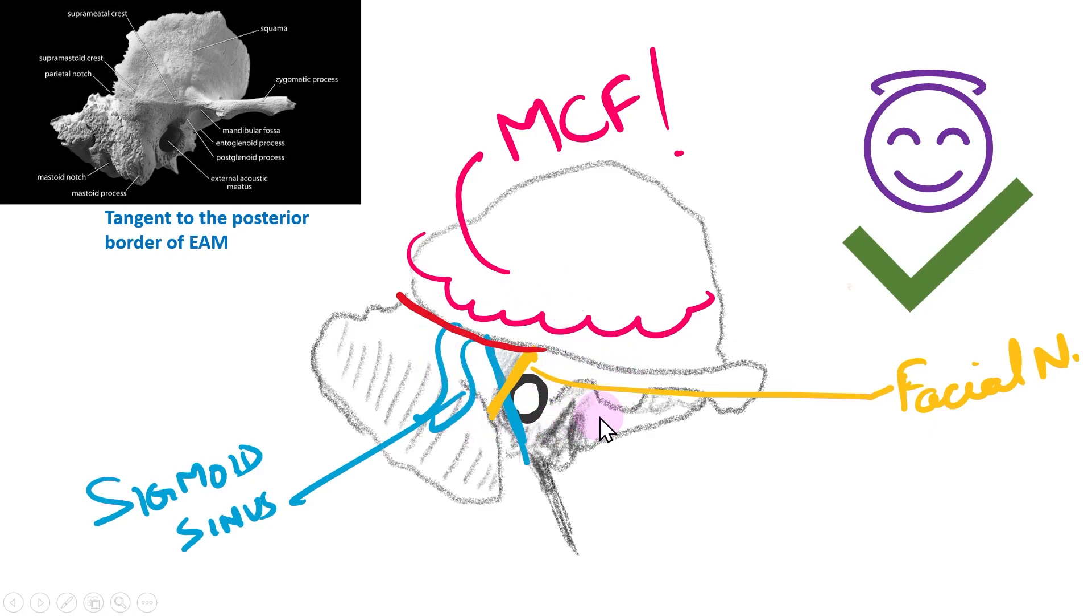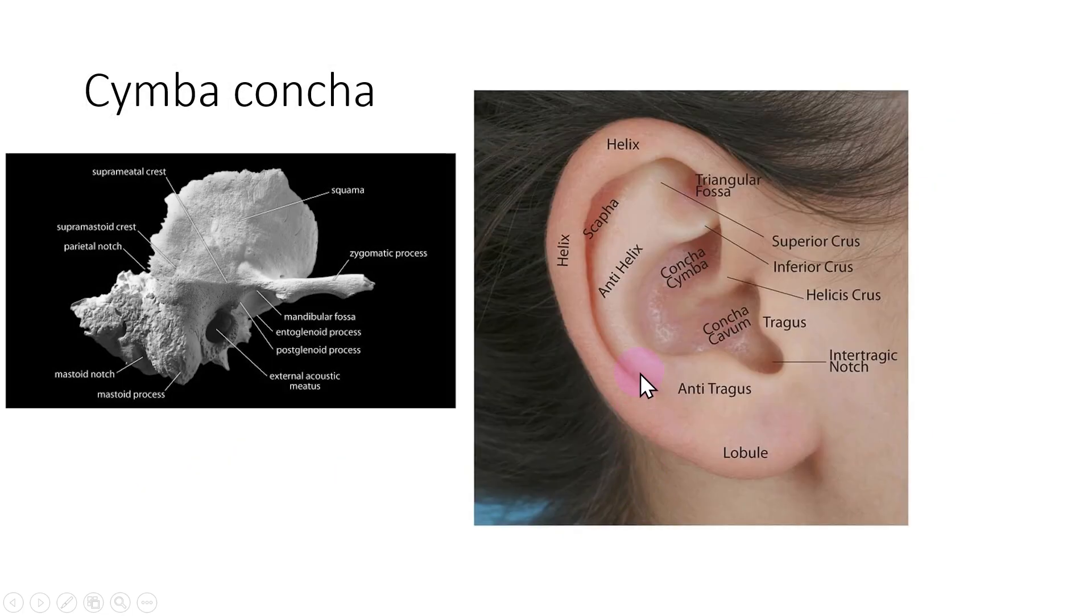MacEwen's triangle also corresponds to a surface landmark, and this point is called the cymba concha, which is understandable because this is the external auditory meatus.